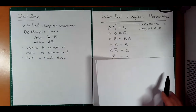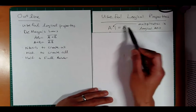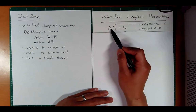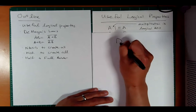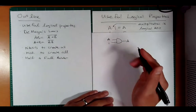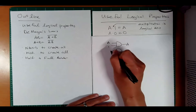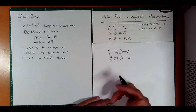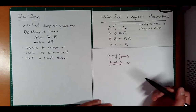Some useful properties involve binary operations. Multiplication is essentially a logical AND. If you have some Boolean signal A — which means A could be 1 or 0 — anytime you AND something with 1, you get that signal back. So A AND 1 equals A. If you AND something with 0, you kill it — A AND 0 equals 0. Also, A AND B equals B AND A, and A AND A equals A.